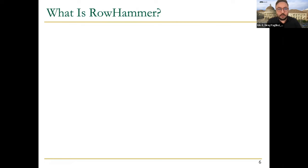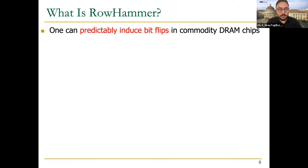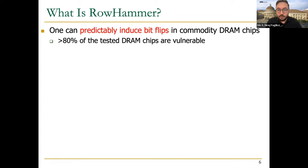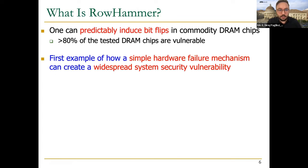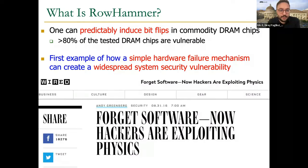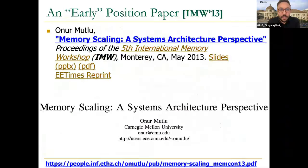We will focus on the rowhammer phenomenon — a phenomenon where one can predictably induce bit flips in commodity DRAM chips. Most DRAM chips on the market are vulnerable to this phenomenon. This is the first example of how a simple hardware failure mechanism can create a widespread system security vulnerability, resulting in articles like 'Forget Software, Now Hackers Are Exploiting Physics.'